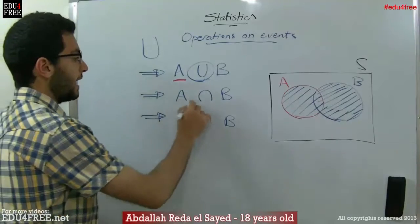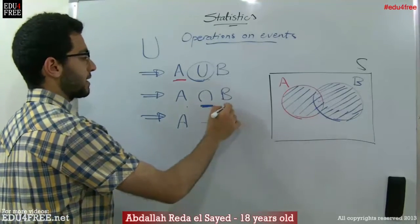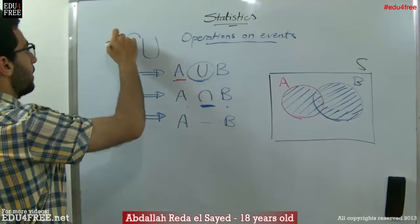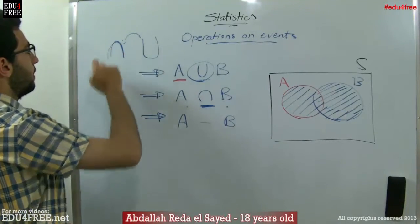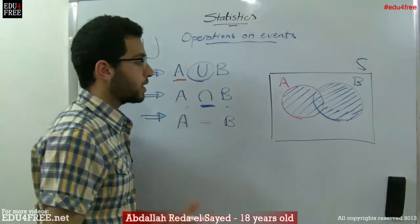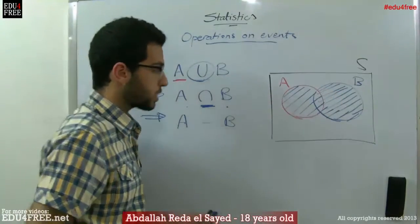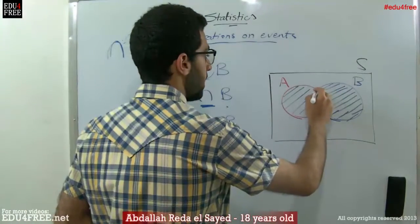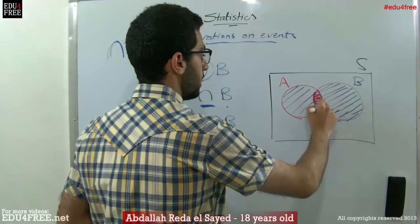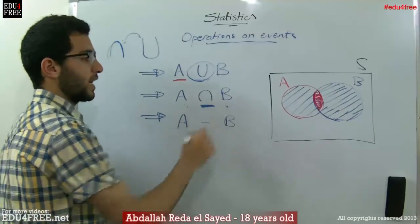Then we have A intersects B. By flipping the union symbol upside down, this means intersection. So the parts where A intersects with B — we mean this area here. So this is A intersects B.